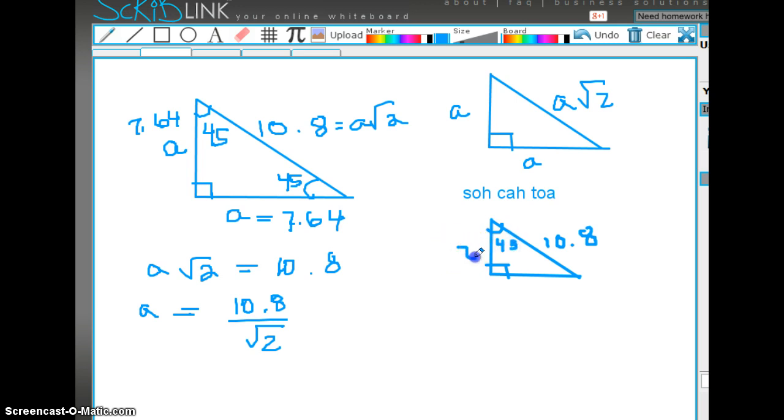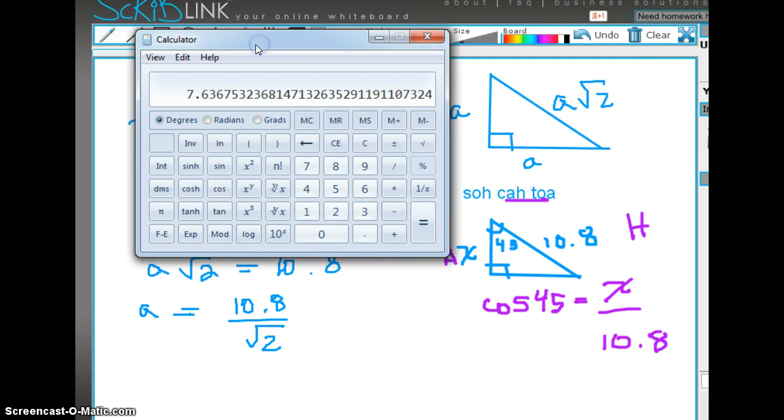The cosine of 45 is equal to the adjacent which is X over the hypotenuse which is 10.8. So cross-multiplying you would take 45 cosine times 10.8 which is 7.64.